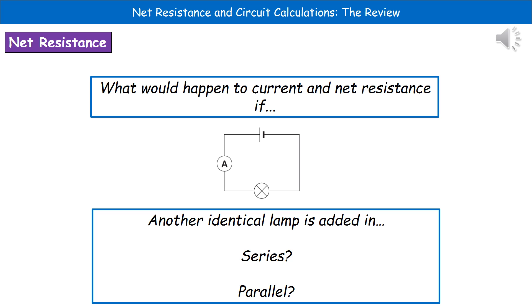One thing you could be asked is to consider what would actually happen to current and net resistance if we added an identical lamp in either series or parallel. Have a think right now — do you know what would happen if we added a second identical lamp in series, and what would happen if we added a second identical lamp in parallel?